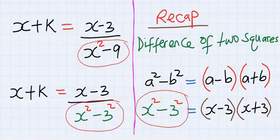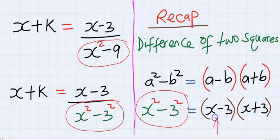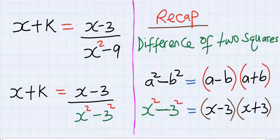Subsequently, x squared minus 3 squared will be equal to x minus 3 in brackets, x plus 3 in brackets. This is the rule governing difference of two squares, and the variables must be separated with a negative.